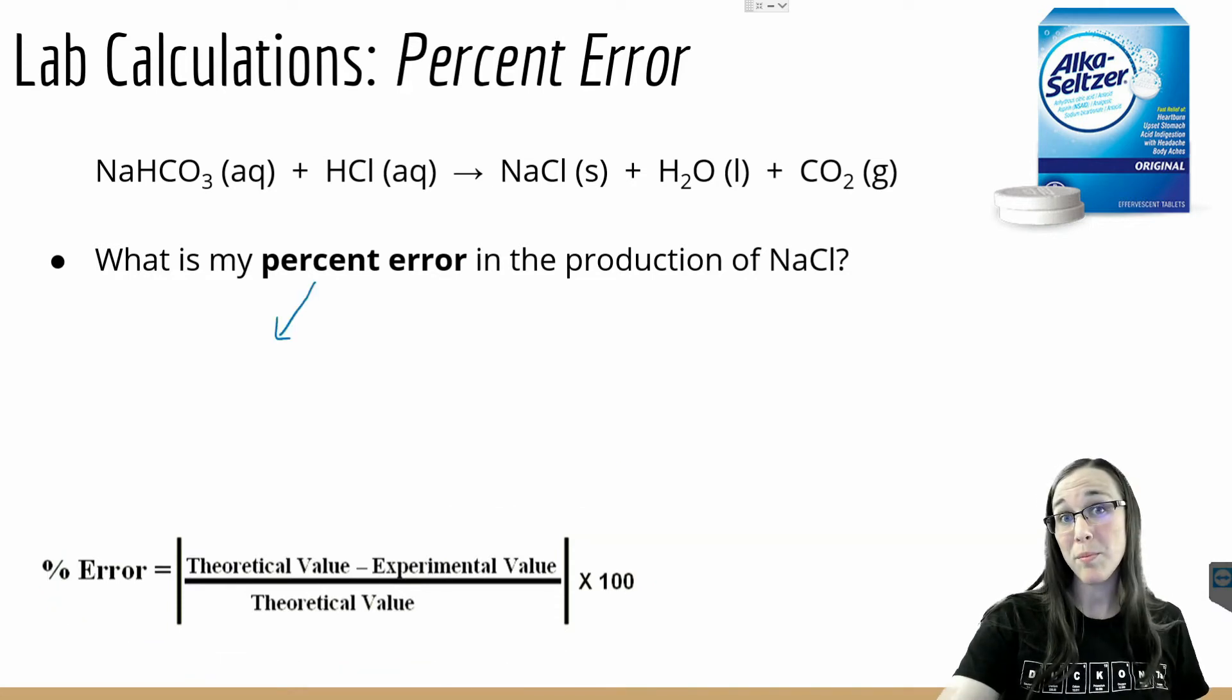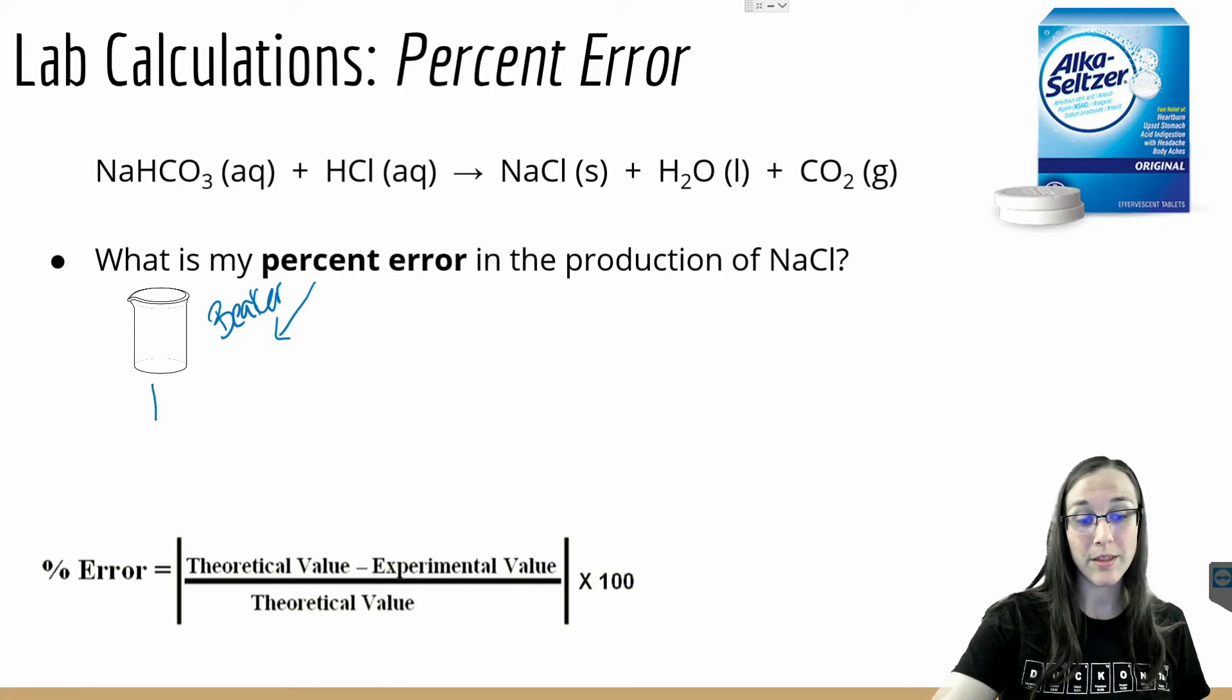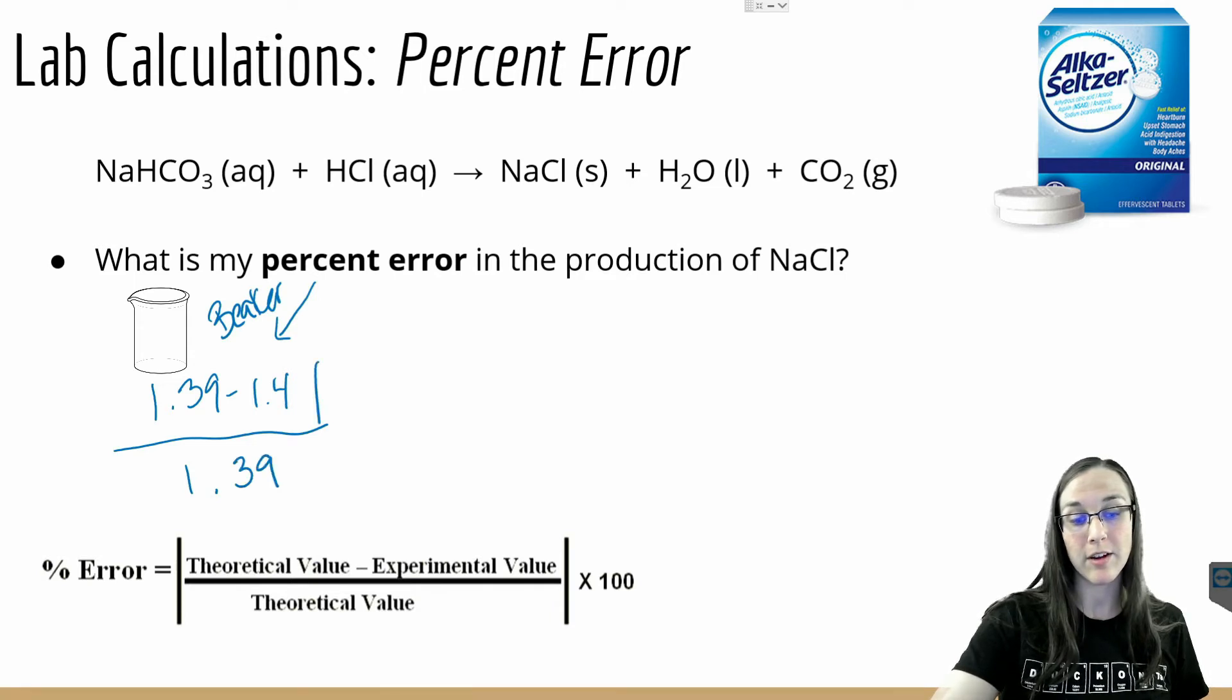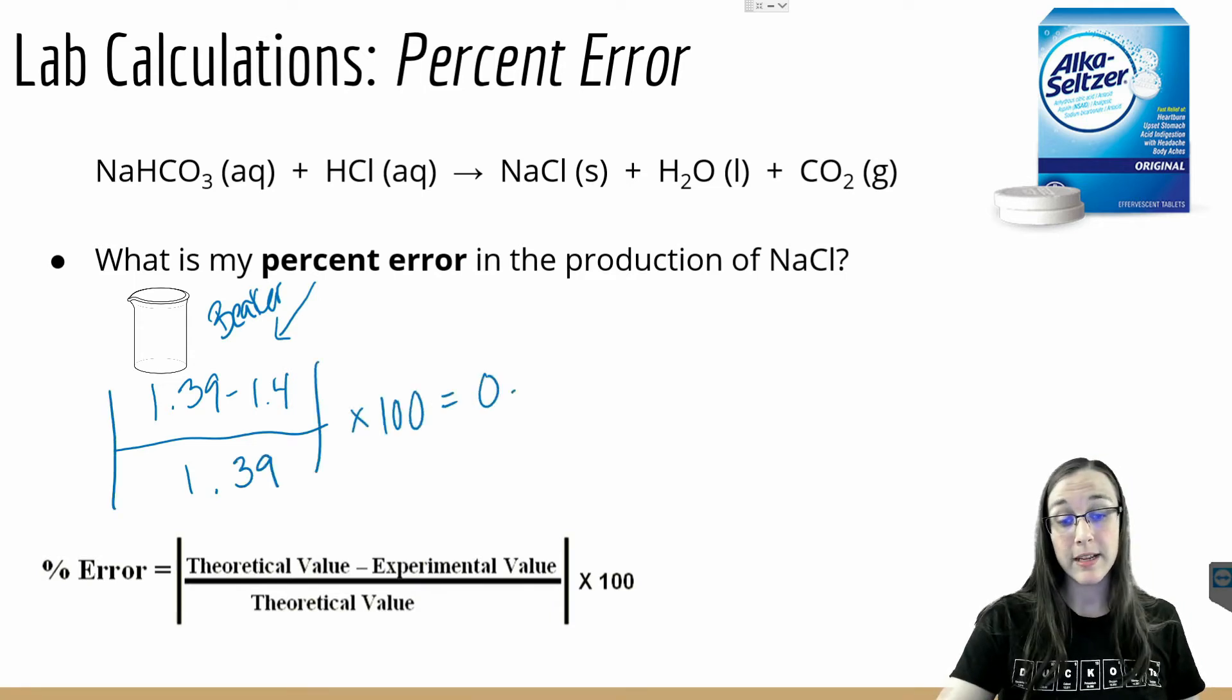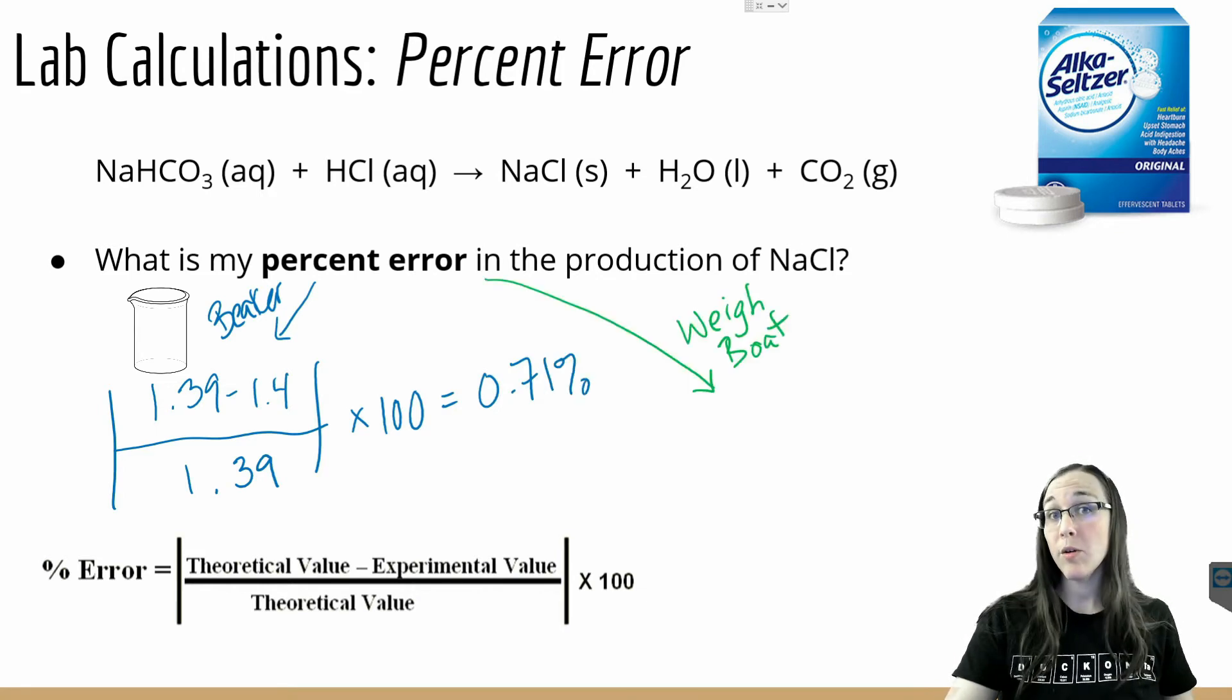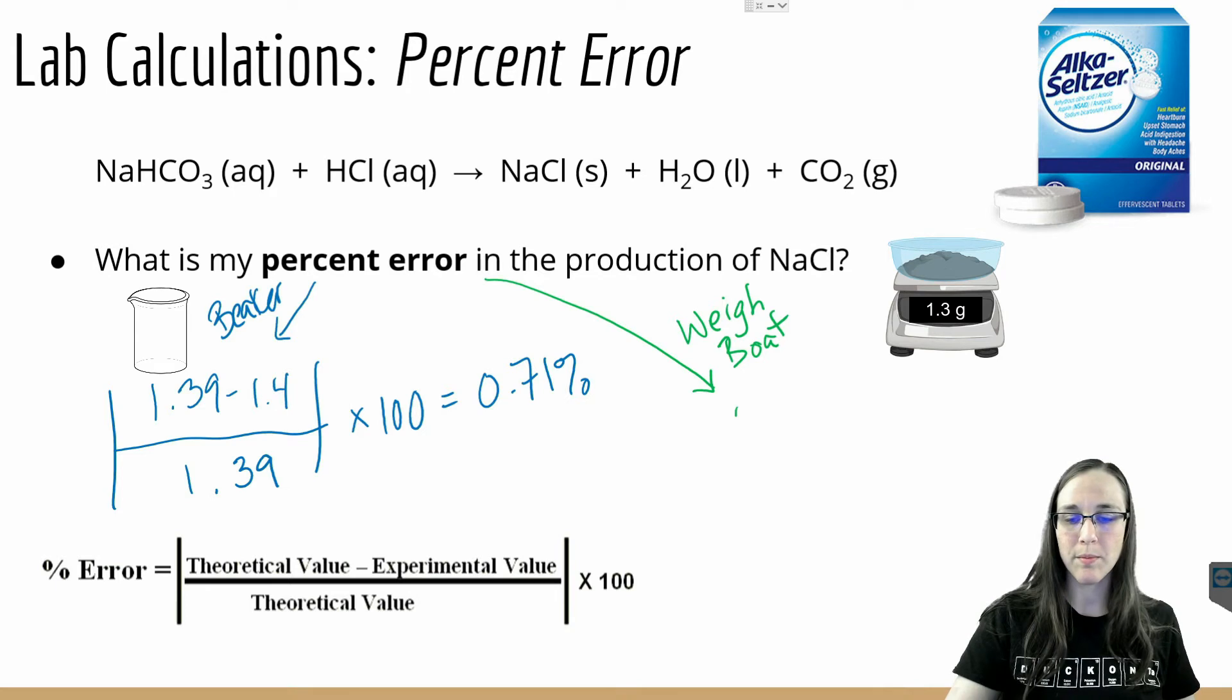Let's try it. If I'm using the 1.4 value from the beaker, I end up with 1.39 minus 1.4 divided by 1.39, absolute value thereof, times 100, which gives me 0.71 percent error.